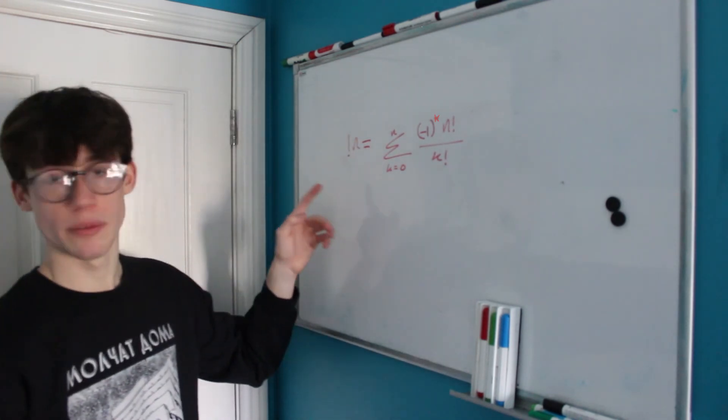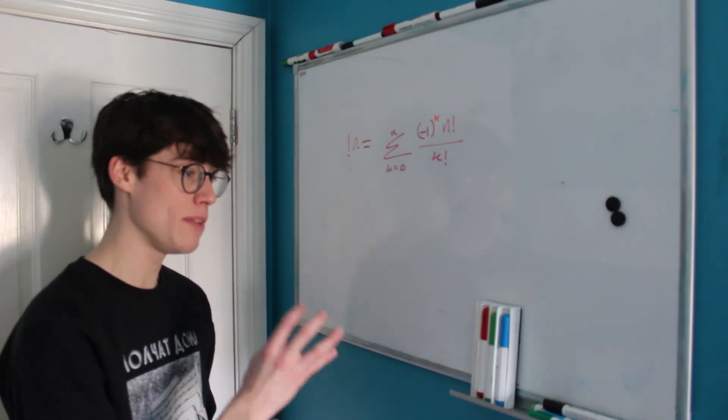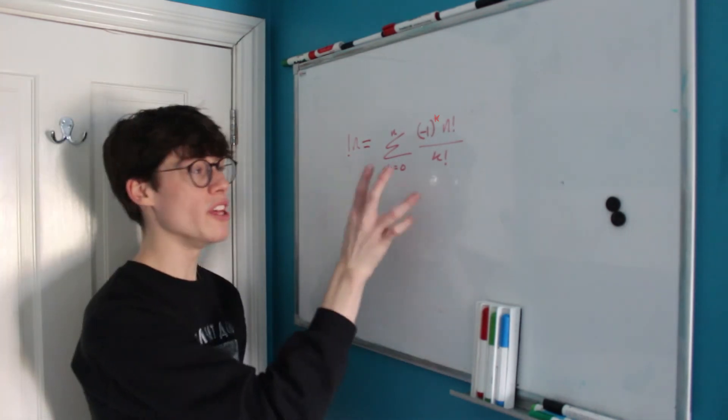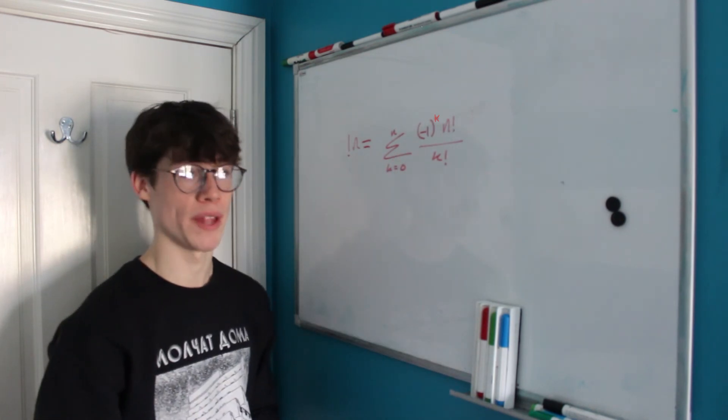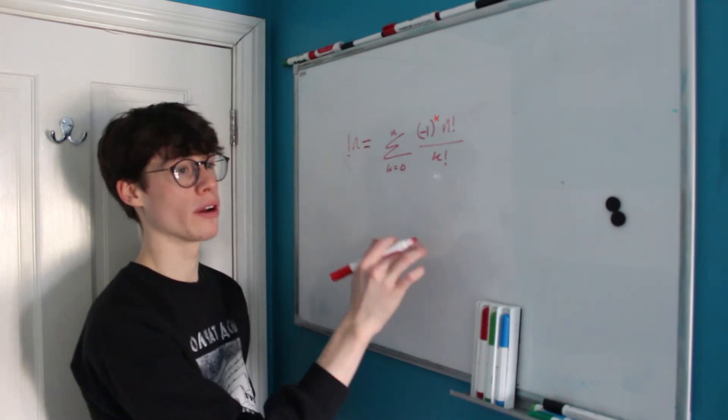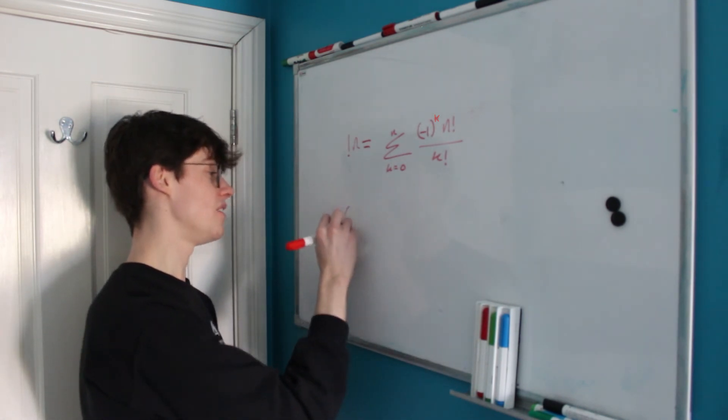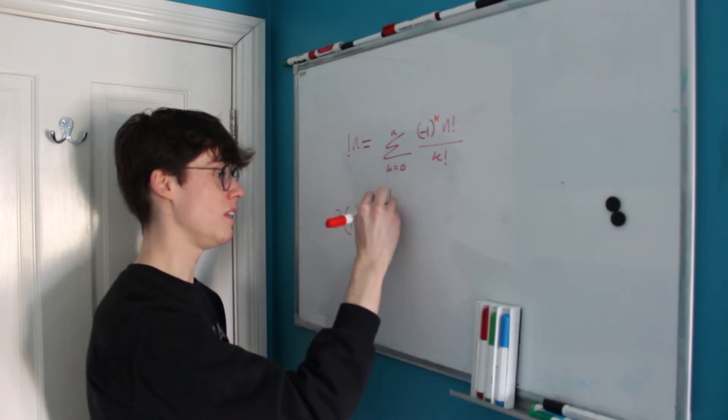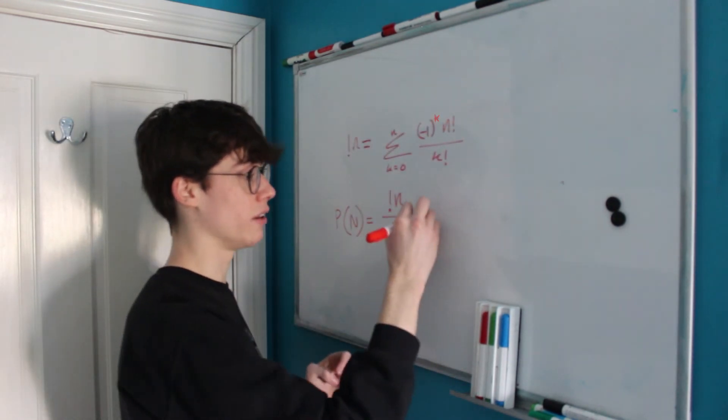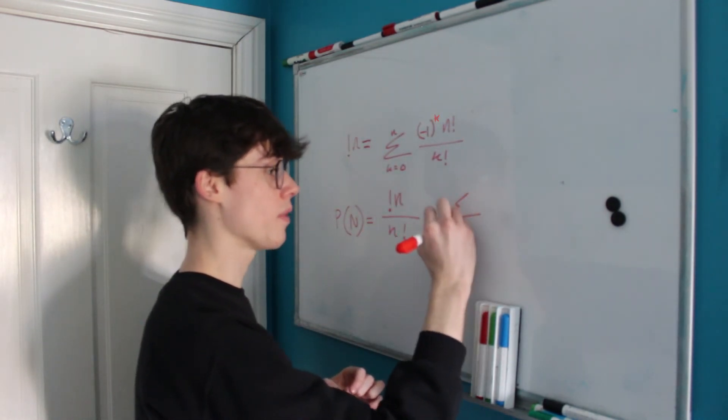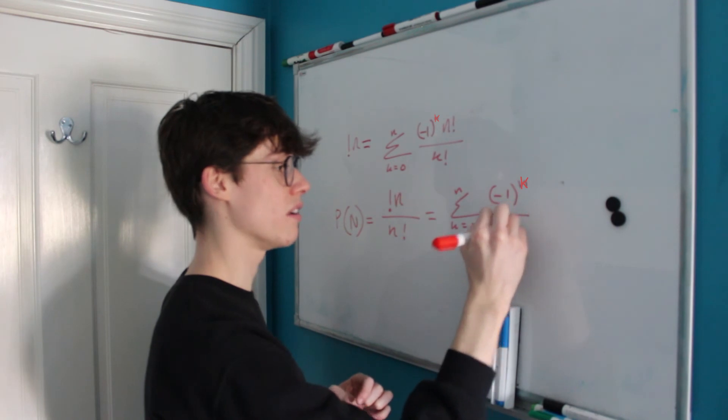Now if you remember the original intention here was to calculate the probability that for n people nobody draws their own name out of the hat. This is for n people how many ways there are such that nobody draws their own name from the hat and we know that the total number of ways that people can draw names out of the hat is n factorial. So the probability that nobody draws their name out of the hat is equal to n subfactorial divided by n factorial and if we just look at our sum here that's equal to the sum from k equals 0 to n of negative one to the k over k factorial.